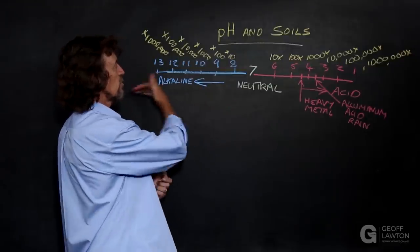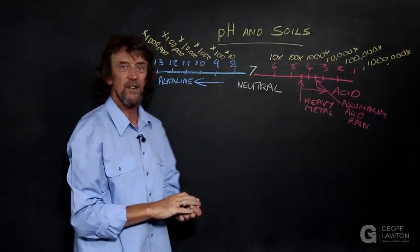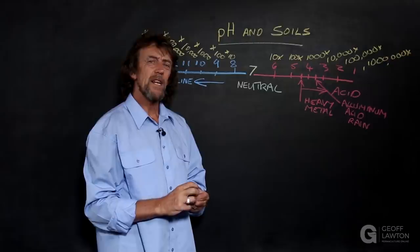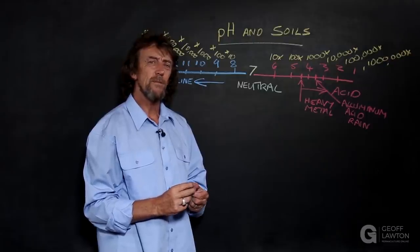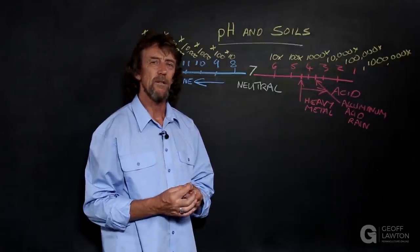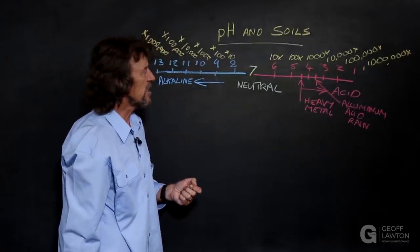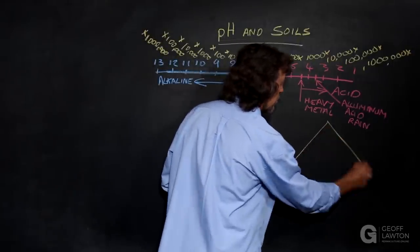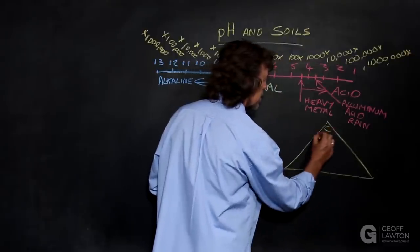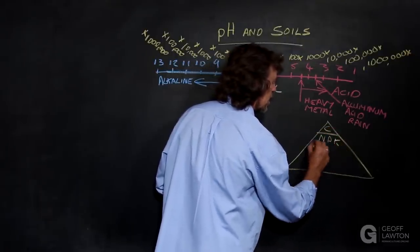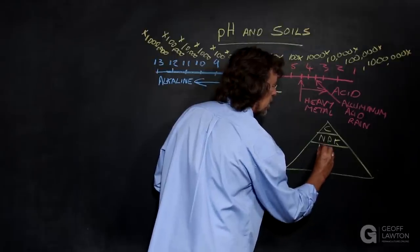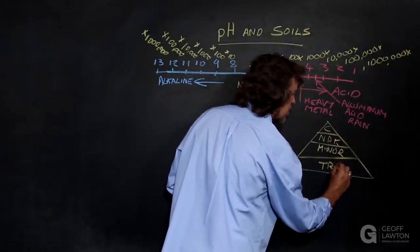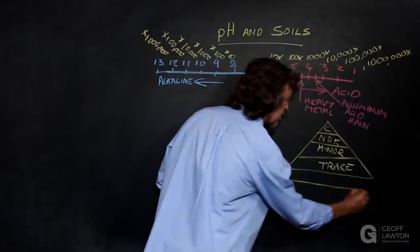And as we go out towards the caustic end, it's just as corrosive. So we need to understand the availability and the importance of elements to plants that are governed by pH. pH governs the availability of elements. So when we look at the elements in the soil—carbon at the top, NPK, the minor elements, and the trace elements—there's these macro and minor trace elements further out.